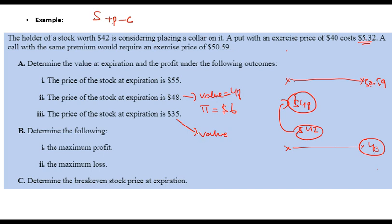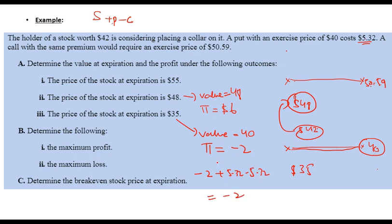Part three: stock price at expiration is $35. Since $35 is below the floor of $40, the value is $40 — it cannot decrease below the floor. Profit = $40 − $42 = −$2, plus $5.32 (call premium received) minus $5.32 (put premium paid) = −$2.